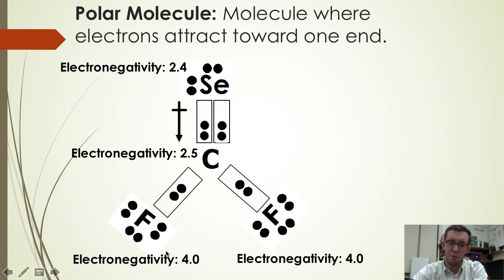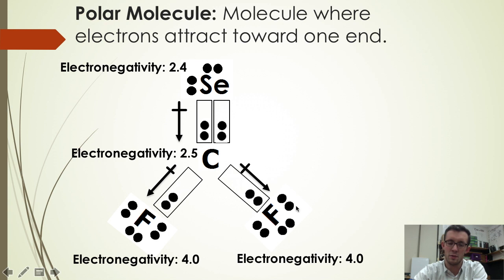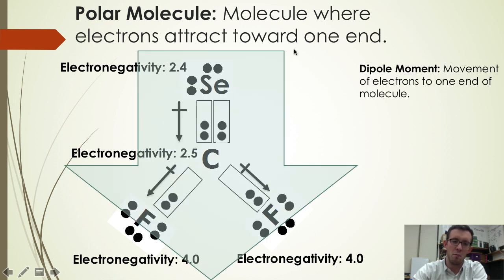And fluorine, because these fluorine atoms have a higher electronegativity than carbon, will attract the shared electrons with carbon closer to themselves. So in this molecule, electrons are in general moving downward toward the fluorine end of the molecule.